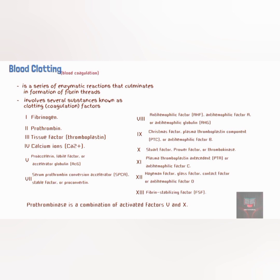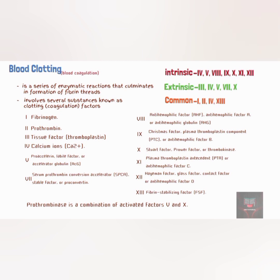The coagulation cascade is made up of three pathways: the intrinsic pathway, which involves clotting factors 4, 5, 8, 9, 10, 11, and 12; the extrinsic pathway, which involves clotting factors 3, 4, 5, 7, and 10; and the common pathway, which involves clotting factors 1, 2, 4, and 8.